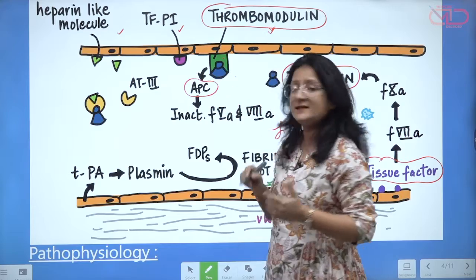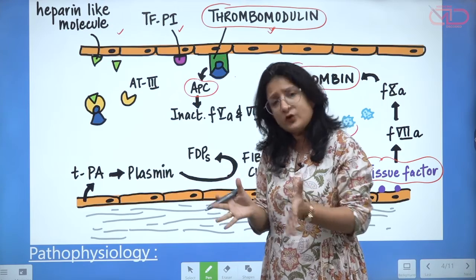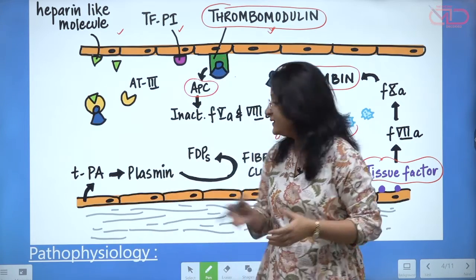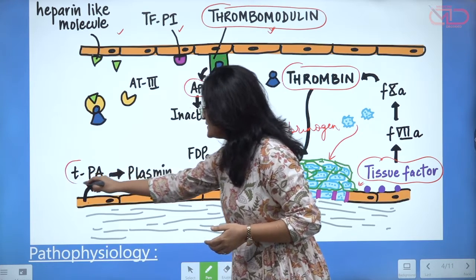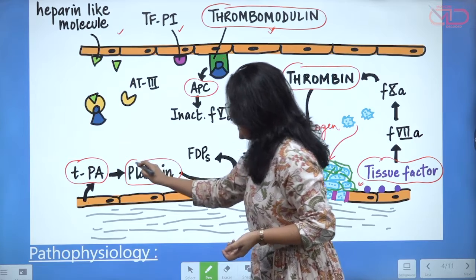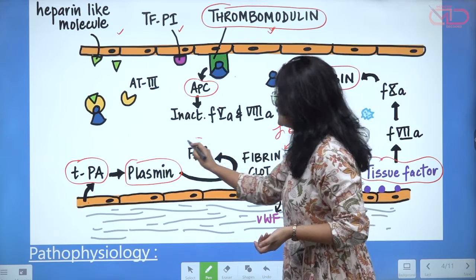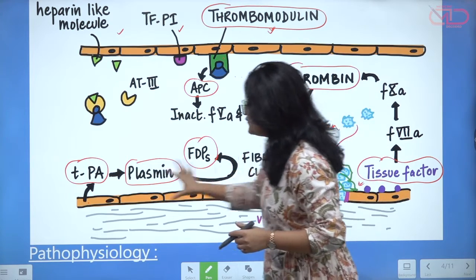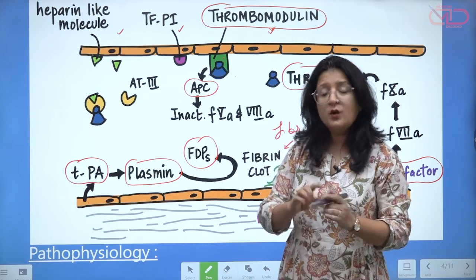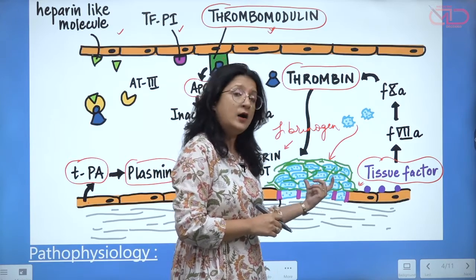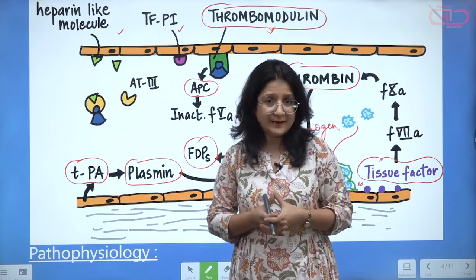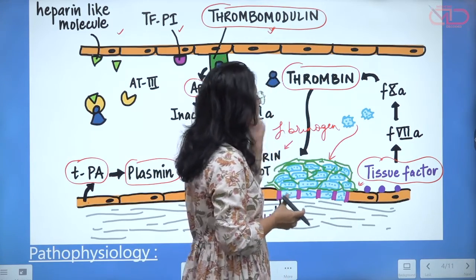Binding to thrombomodulin activates protein C (activated protein C), which sets into motion the anti-coagulation system that limits the extension of thrombus formation. At the same time, healthy endothelial cells express tissue plasminogen activator, which converts plasminogen to plasmin. Plasmin breaks down the fibrin clot and releases fibrin degradation products — this is the fibrinolytic pathway. Normally, clot formation is therefore limited only to the site of injury and does not extend to healthy endothelium. When this physiology is clear, we can understand that DIC sets in when overwhelming thrombin formation overwhelms the anti-coagulant and fibrinolytic capacity of the body.